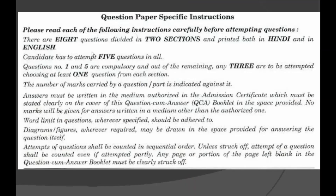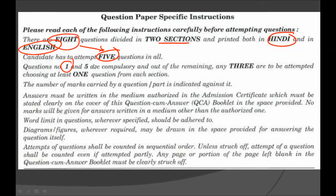There are some instructions, pretty similar to paper 1. There are a total of 8 questions divided into 2 sections, printed in Hindi and English. Out of these 8 questions you have to attempt only 5, and out of them question number 1 and question number 5 are compulsory.